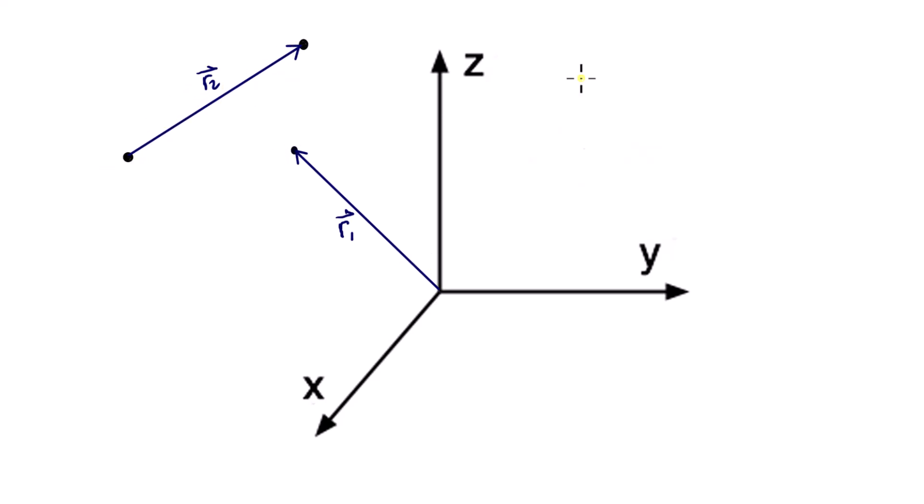If you're in a Cartesian coordinate system, any position vector R in general is x2 minus x1 i hat plus y2 minus y1 j hat plus z2 minus z1 k hat. So if you're at the origin, x1, y1, and z1 are equal to 0.